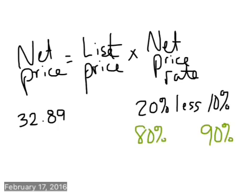Now, 80% and 90% as decimals are 0.8, 0.9. So to find that net price rate, you take 0.8 times 0.9, and you get 0.72. So it's 0.72. So for that particular thing, we've just found the net price rate, so it was 72% or 0.72.